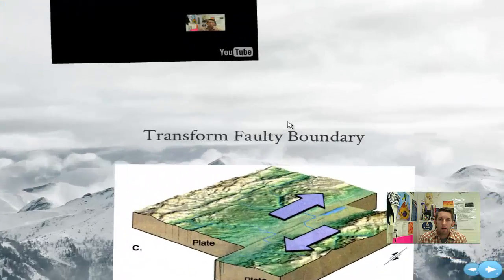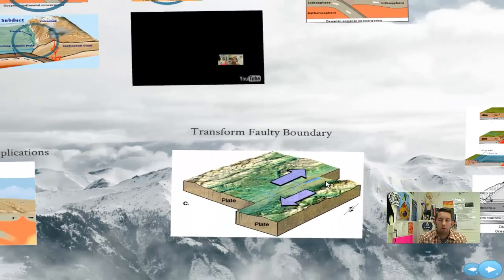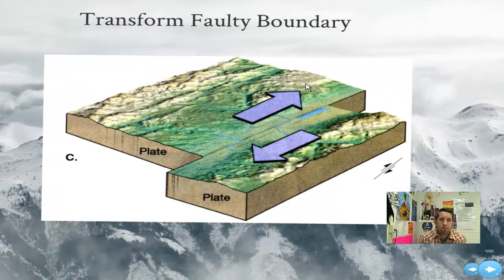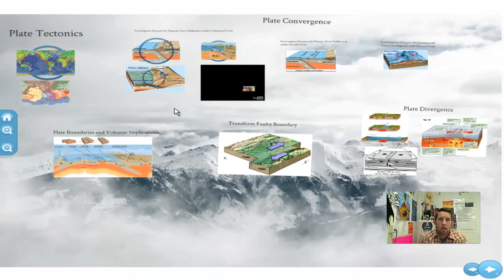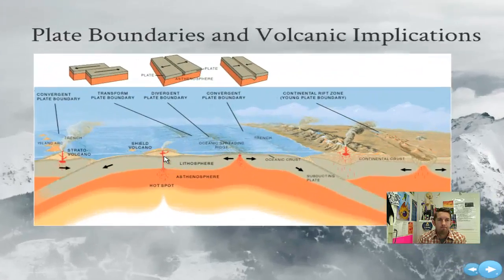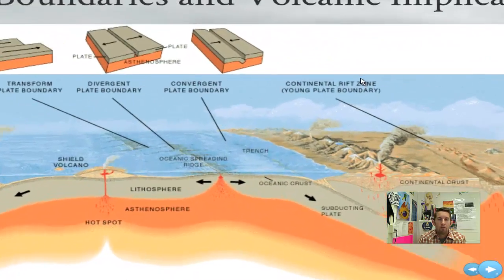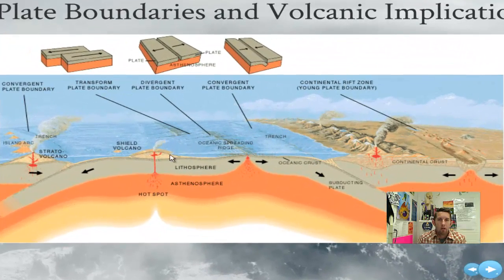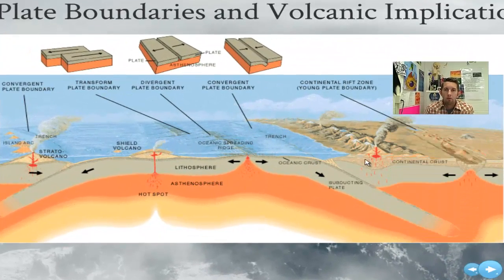The third kind is a transform fault boundary. This is pretty simple — the plates are just sliding along one another. Now, plate tectonics has a lot of ramifications, some of which are volcanoes. Let's look at this picture — I thought it was pretty good. It kind of goes over a lot of what we're talking about.